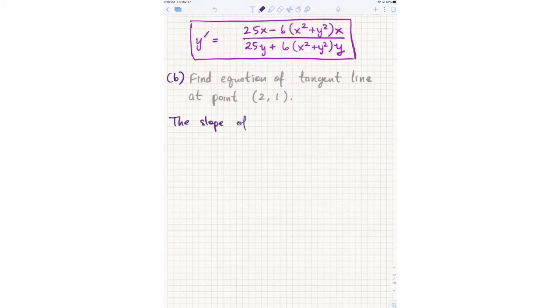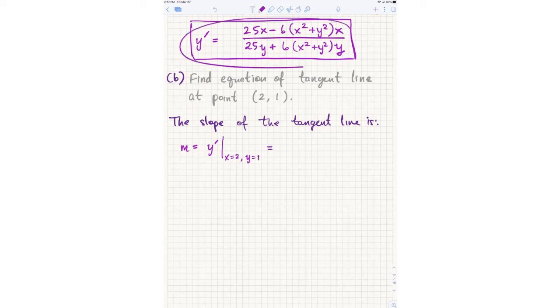So the slope of the tangent line: all I do is substitute in, so I do y' evaluated at x equals 2 and y equals 1. So I substitute those two numbers into this boxed expression at the top of the screen. And we should get 50 - 6(5)(2) over 25 + 6(5)(1). And if you work out this arithmetic, you should get negative 2 over 11. Check my notes. Oh yeah, so you get -2/11 for the slope.